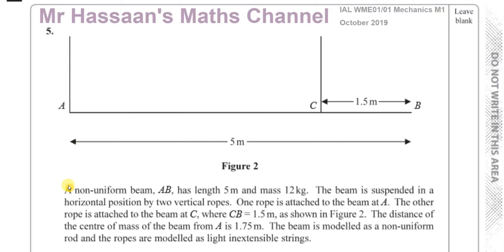We've got a question about a non-uniform beam AB, which has length 5 meters and mass 12 kilograms. Non-uniform means that the center of mass is not in the geometric center. So if it was a uniform beam, we could say the center of mass acts exactly 2.5 meters from the end — halfway along the beam — but we cannot say that here.